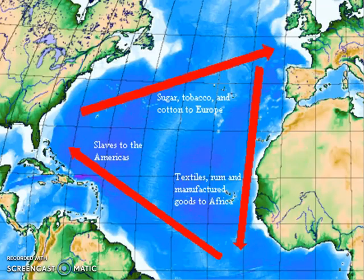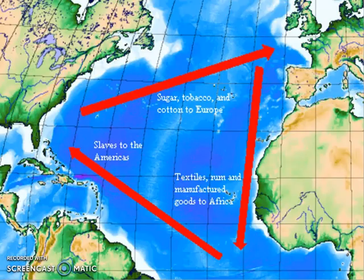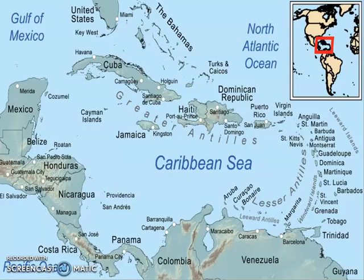This is going to be part of what's called the Triangular Trade. It was a trade between Europe, Africa, and the Americas, basically bringing slaves over in exchange for guns and other things like that. The Europeans were setting up colonies and then utilizing slave labor to work on all of these different islands.